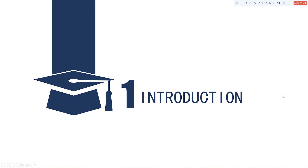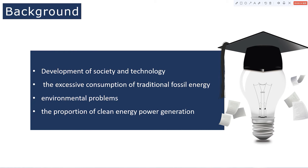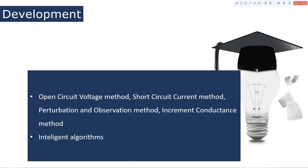Part 1 is the introduction. Due to the development of society and technology, people's demand for electricity is increasing and the excessive consumption of traditional fossil energy, along with worsening environmental problems, has led people to focus on clean energy such as wind, solar, and tidal energy. Making the system operate at the maximum power point is a key issue. Current maximum power point methods include the open-circuit voltage method, short-circuit current method, perturbation and observation method, and incremental conductance method — these are traditional measures.